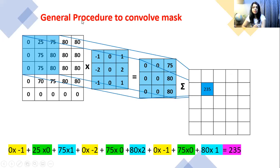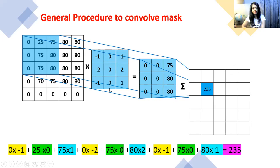Now, what is the general procedure to convolve a mask? We have done it earlier also, but let me explain it one more time. Suppose this is any image and this is the kernel — this kernel will be different for high pass filtering. This is just an example showing one mask and one image.